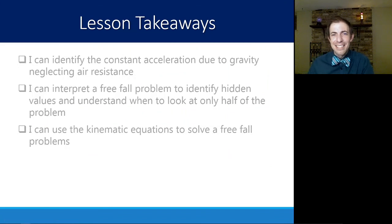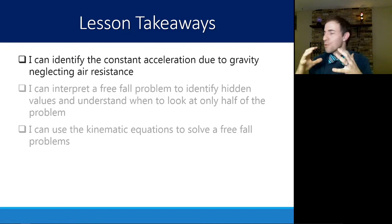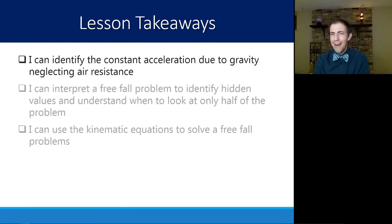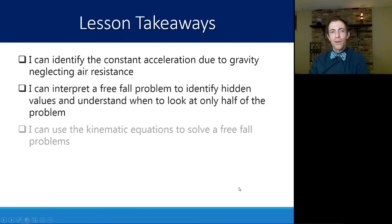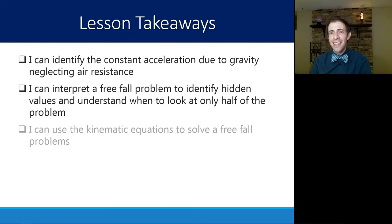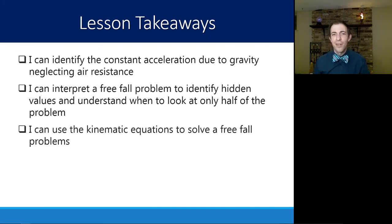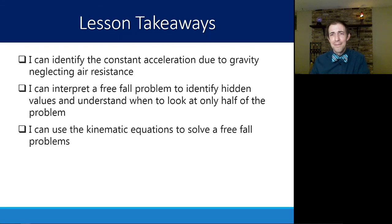From this lesson, the key takeaways are: you should be able to identify the constant acceleration due to gravity — recognize the number 9.81, which is given in your data booklet. You should be able to interpret a freefall problem to identify hidden values, such as knowing that if you drop something its initial velocity is zero. And you should be able to use the kinematic equations to solve freefall problems, especially for objects that go up and down — knowing to divide the time in half or adjust it depending on what you're looking for.